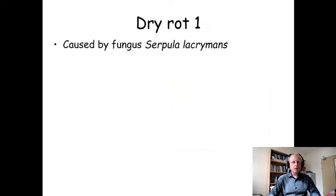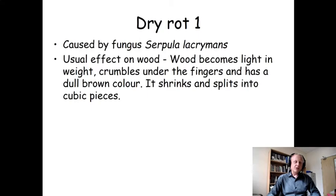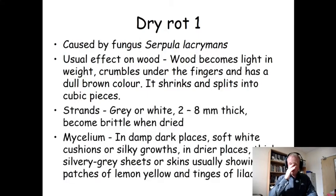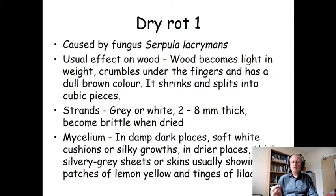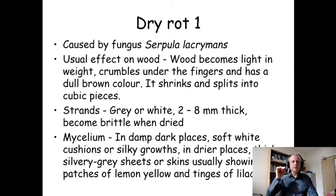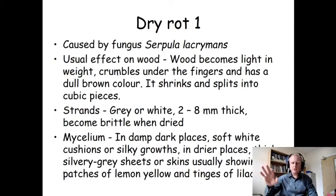The rot that gets everybody worried is Serpula lacrymans - a lovely name for a pretty bad fungus. Its usual effect on wood: it goes all squishy and spongy, but Serpula lacrymans has some quite characteristic decomposition patterns. The wood crumbles, becomes very lightweight, and very often remains dry whilst being rotted. It goes a dull brown colour, often with a reddish dust associated with it, and interestingly it always splits into roughly cubic pieces, which is really quite odd. Any visible fungus on the surface of the wood may form sheets or strands of grey or white filaments.